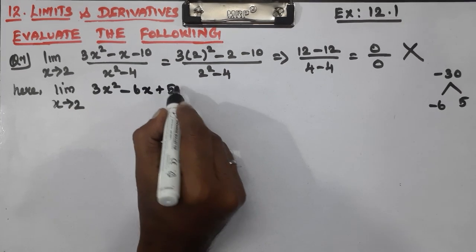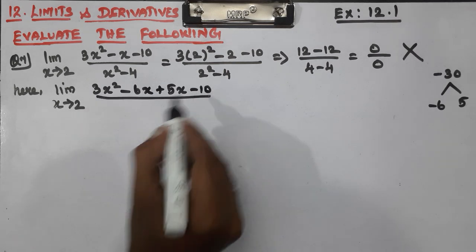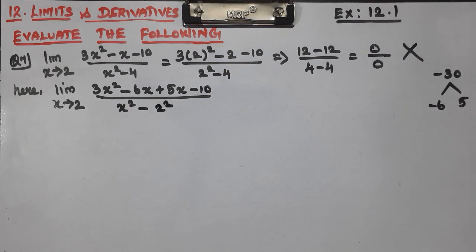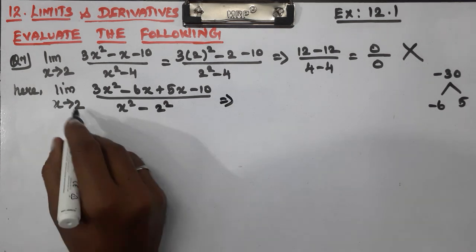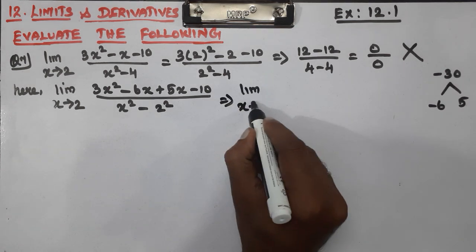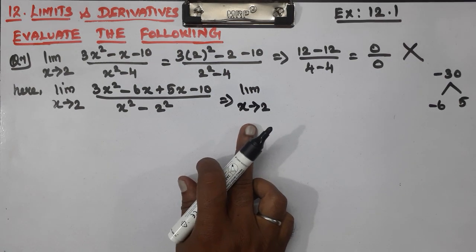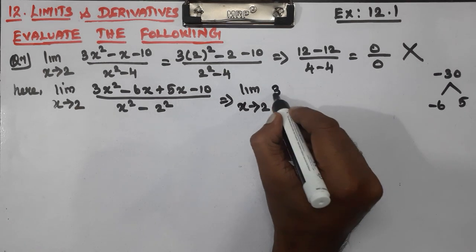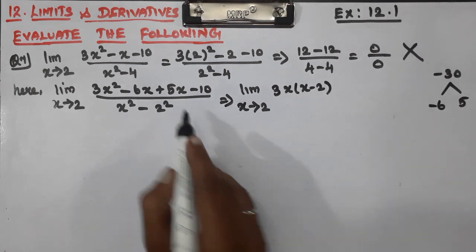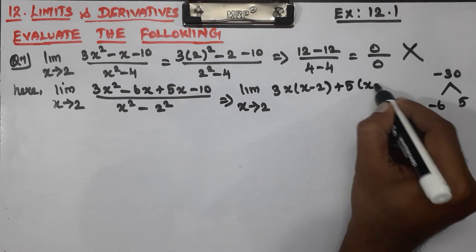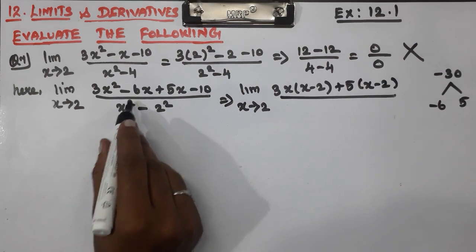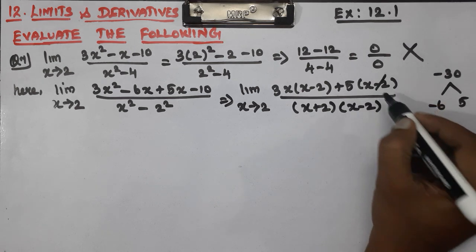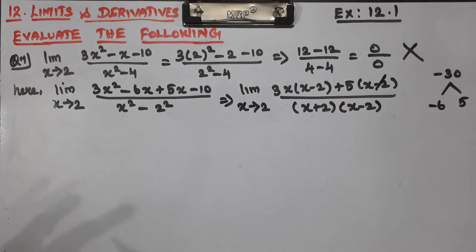The numerator is 5x minus 10, divided by x squared minus 4. Using the a plus b into a minus b identity — cancel common factors.